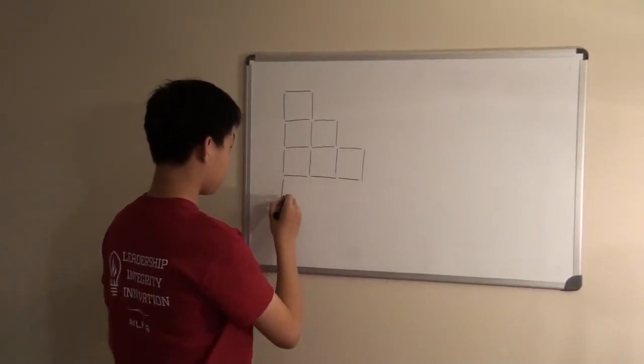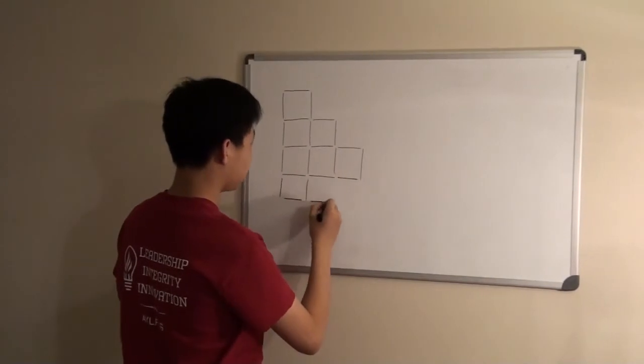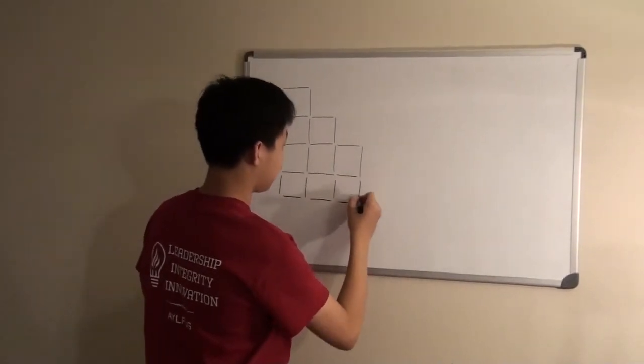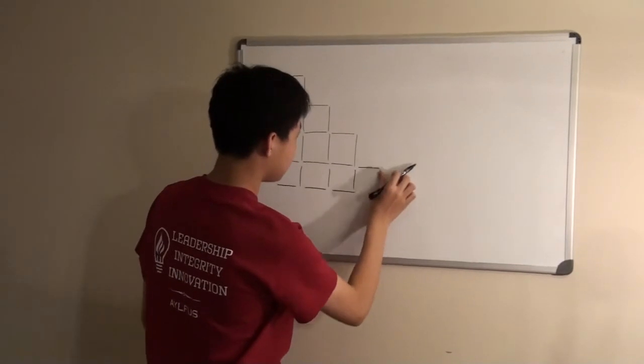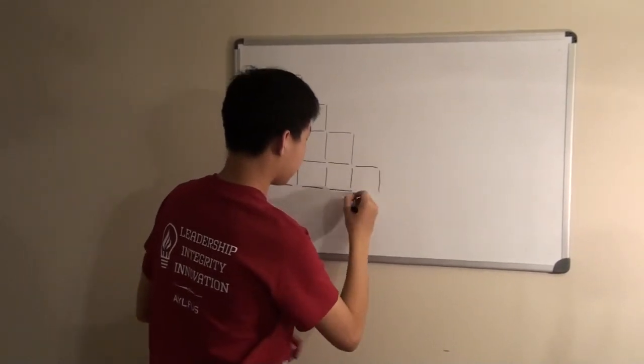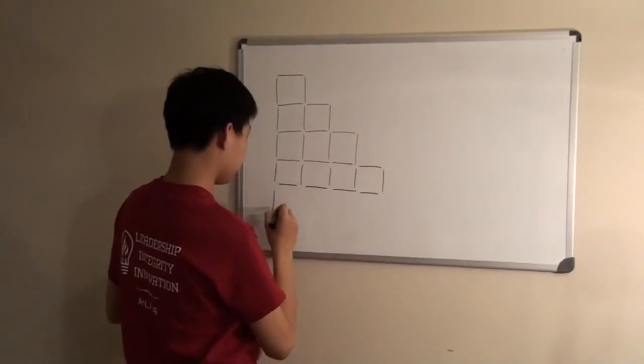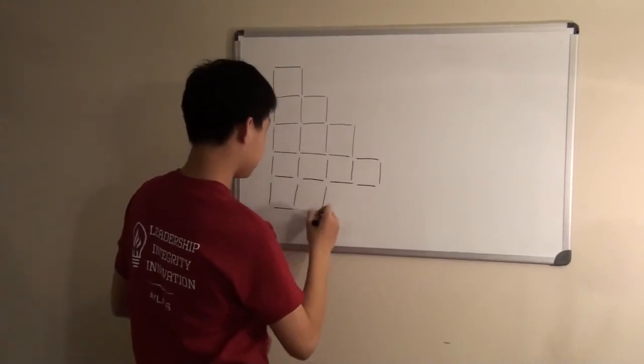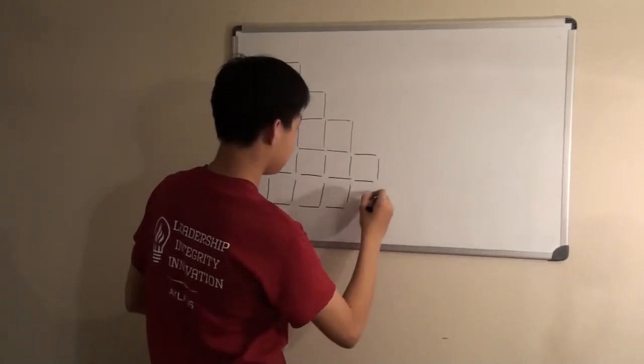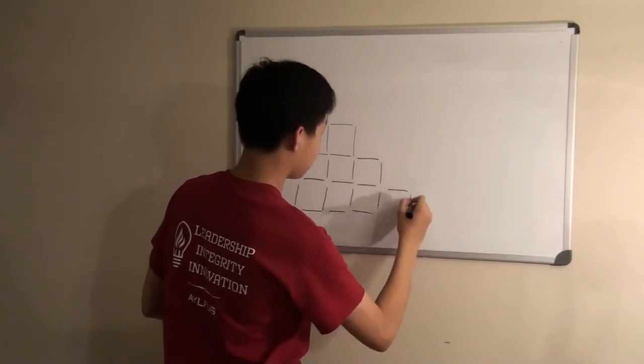So, counting the toothpicks: 1, 2, 3, 4, 5, 6, 7, 8, 9, 10, 11, 12, 13, 14, 15, 16, 17, 18, 19, 20, 21, 22.